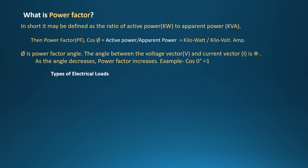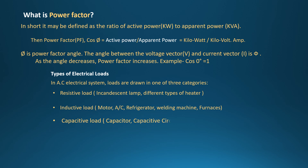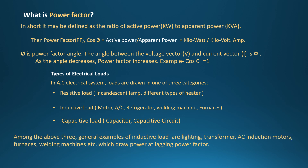Types of electrical loads: in an AC electrical system, loads are drawn in one of three categories — resistive, such as incandescent lamps; inductive loads such as motors, AC refrigerators, welding machines, furnaces, etc.; and capacitive, such as capacitors and capacitive circuits. Among these, general examples of inductive loads are lighting, transformers, AC induction motors, furnaces, and welding machines, which draw power at a lagging power factor.